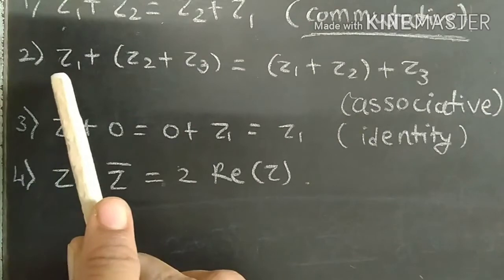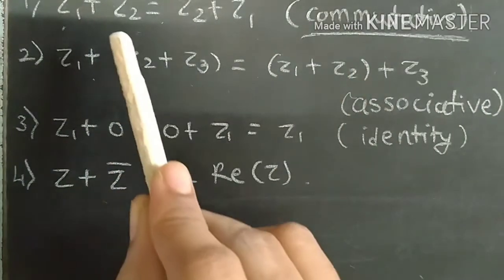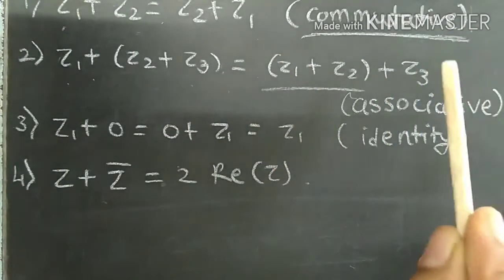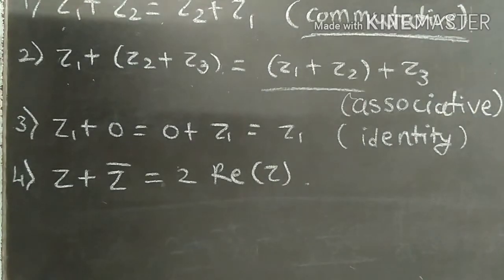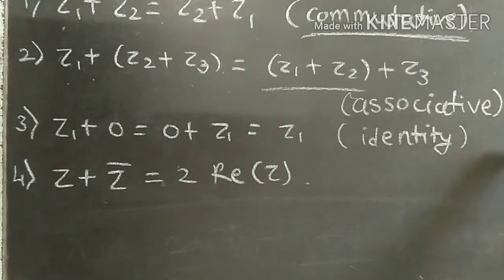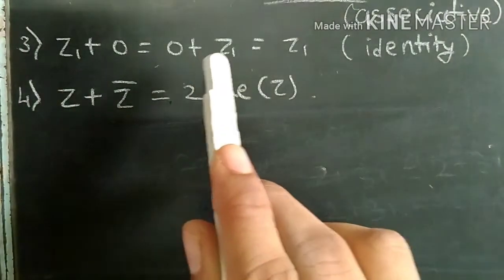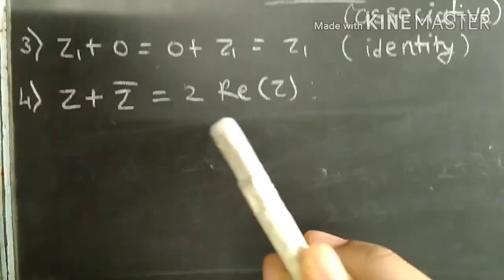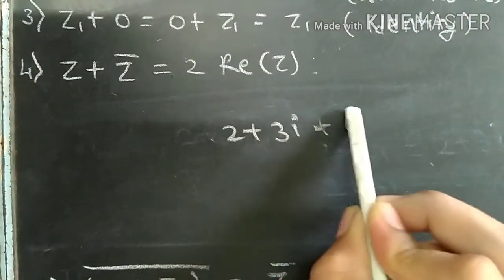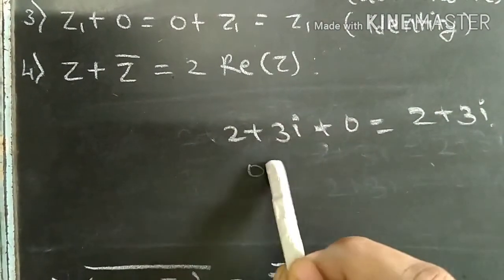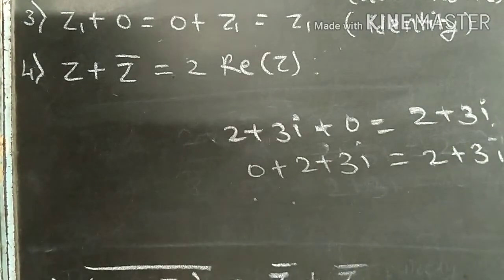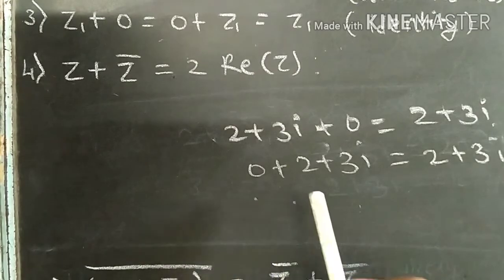Next is associativity: Z1 plus Z2 plus Z3. Whether we first add the first two and then add Z3, or first add Z1 then add the others, the answer is the same. This property is called the Associativity property. Also, Z1 plus 0 equals 0 plus Z1 equals Z1 — when we add zero to any complex number, we get the same complex number back. This means 0 is the additive identity of complex numbers.